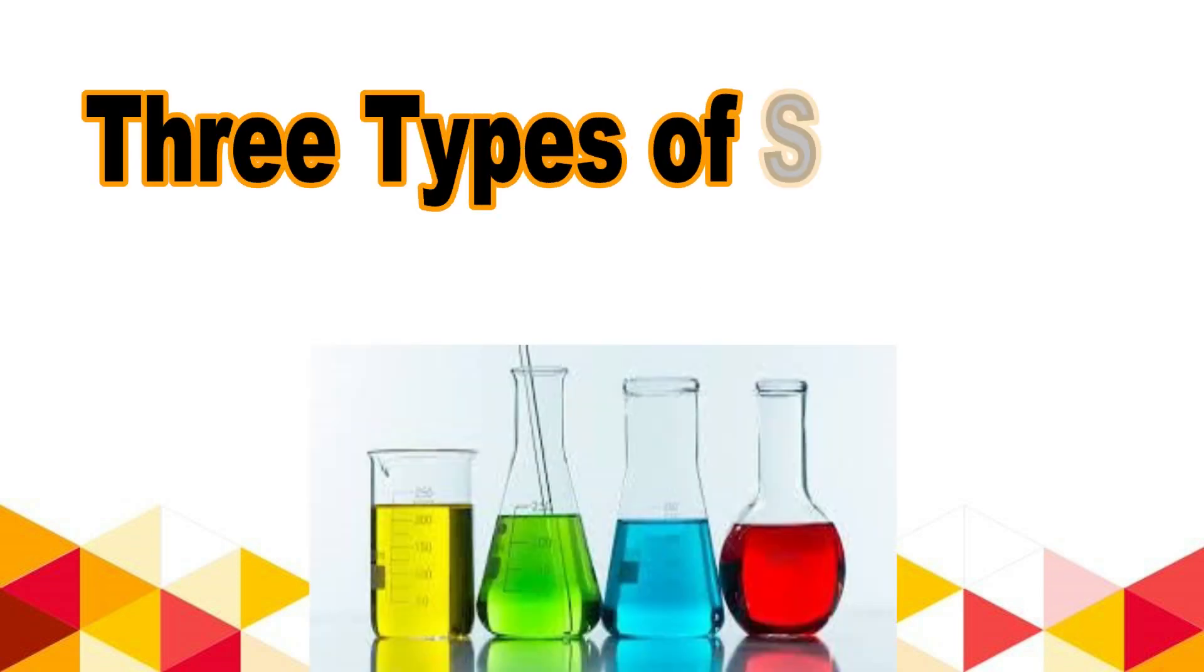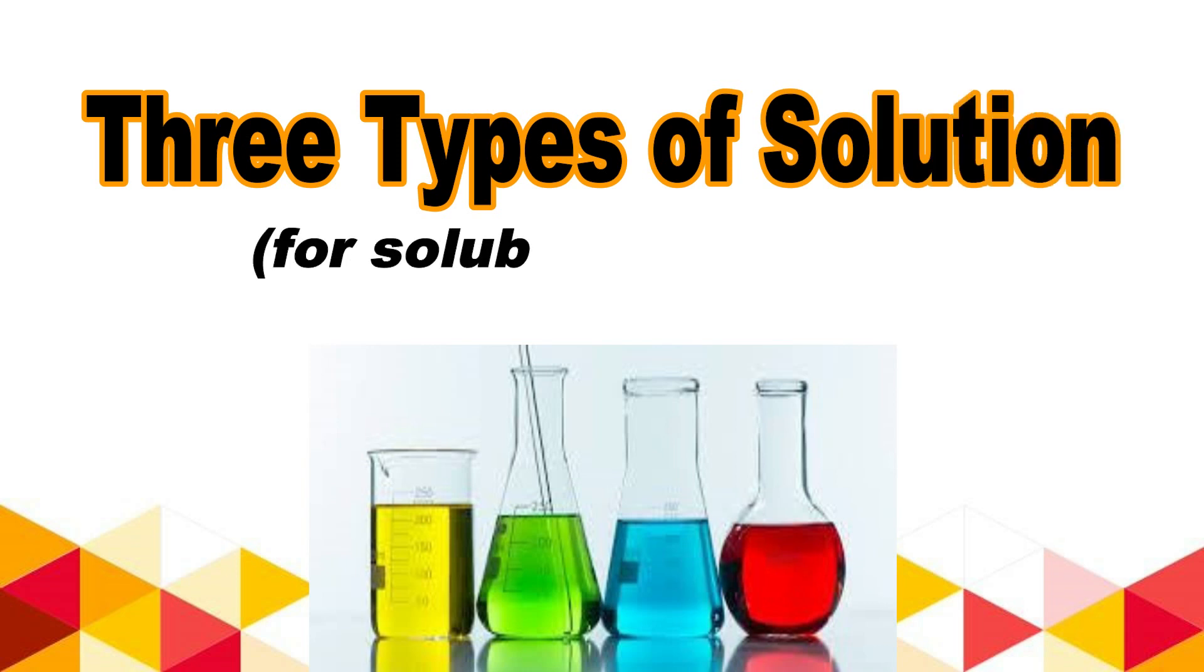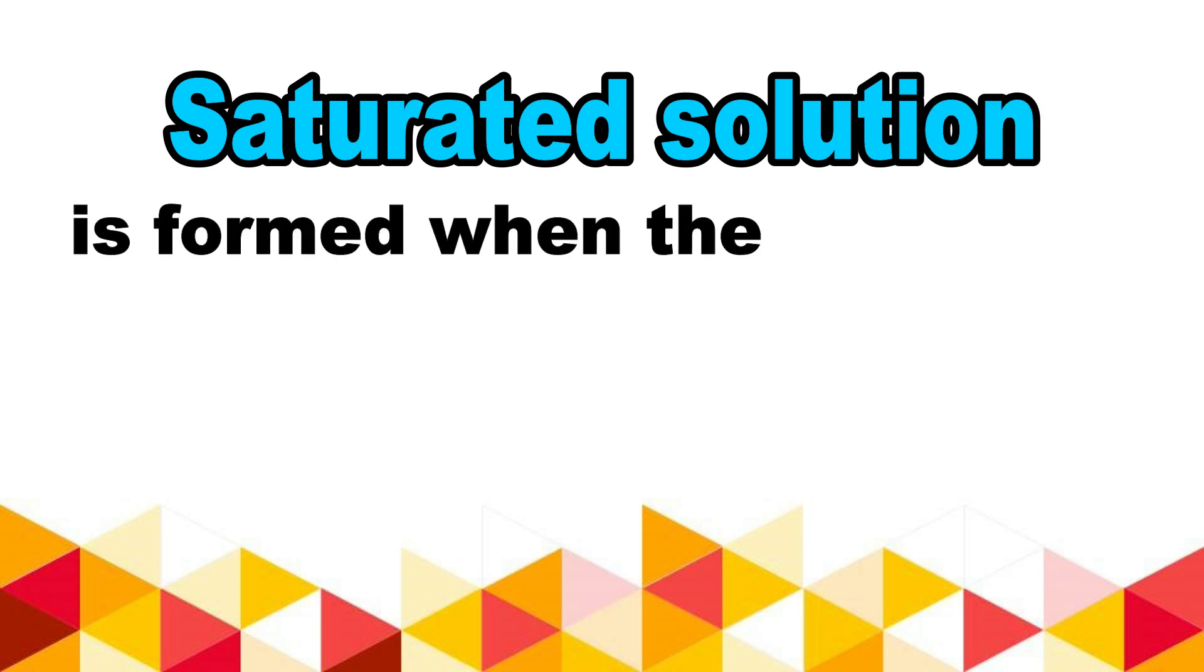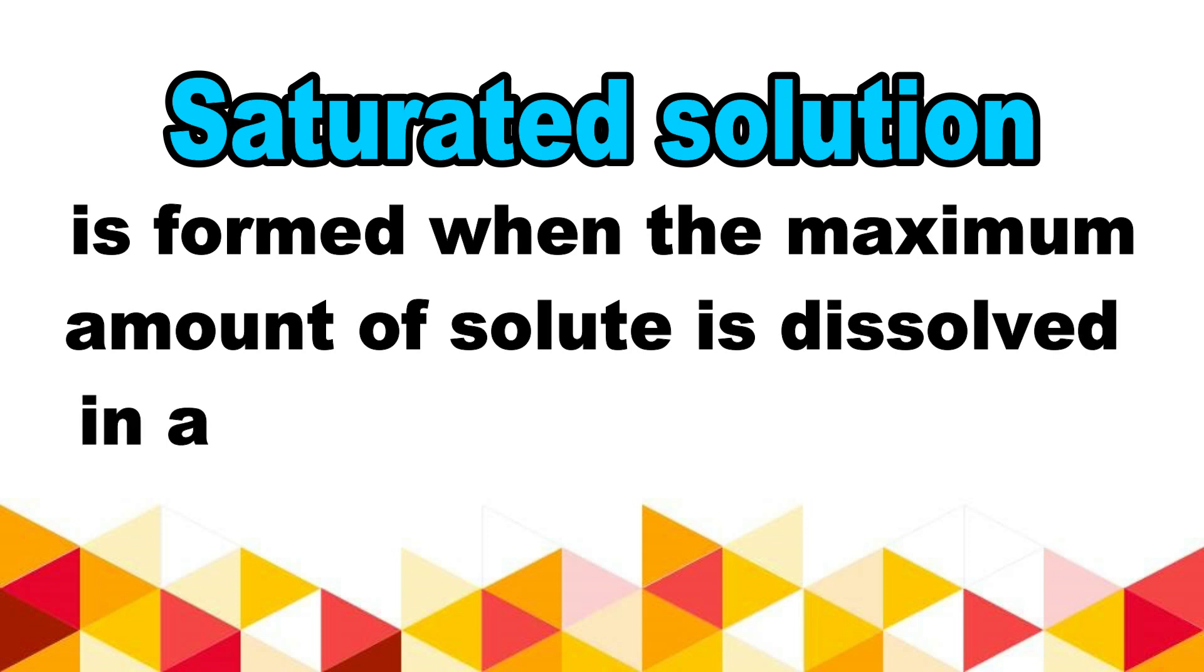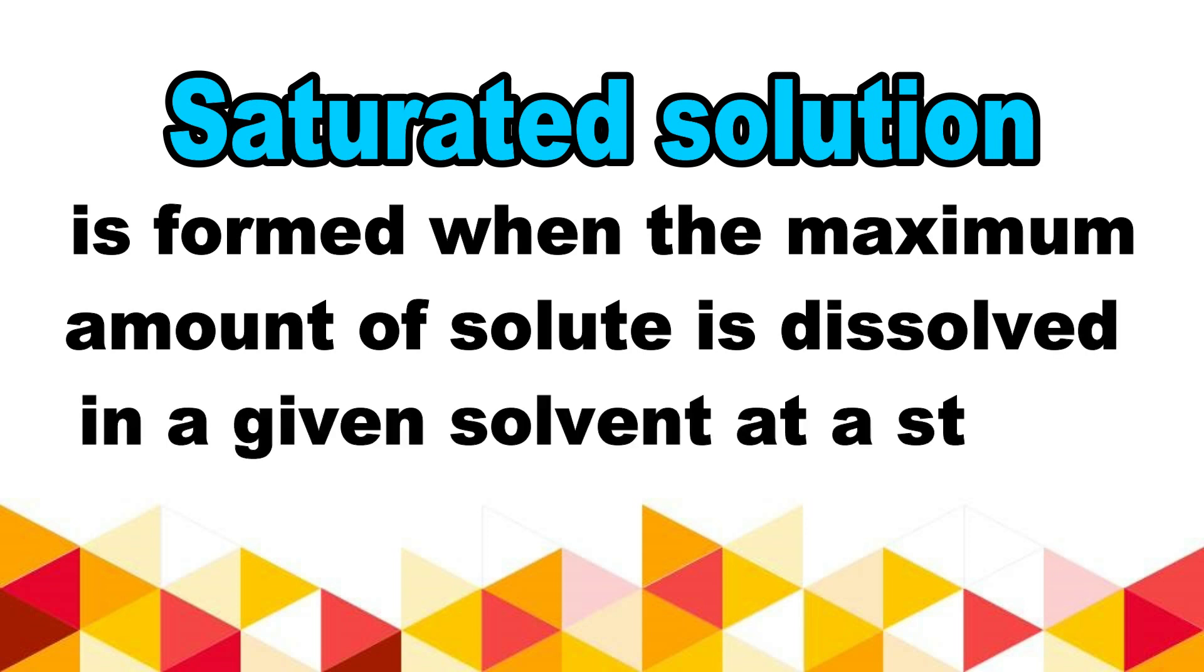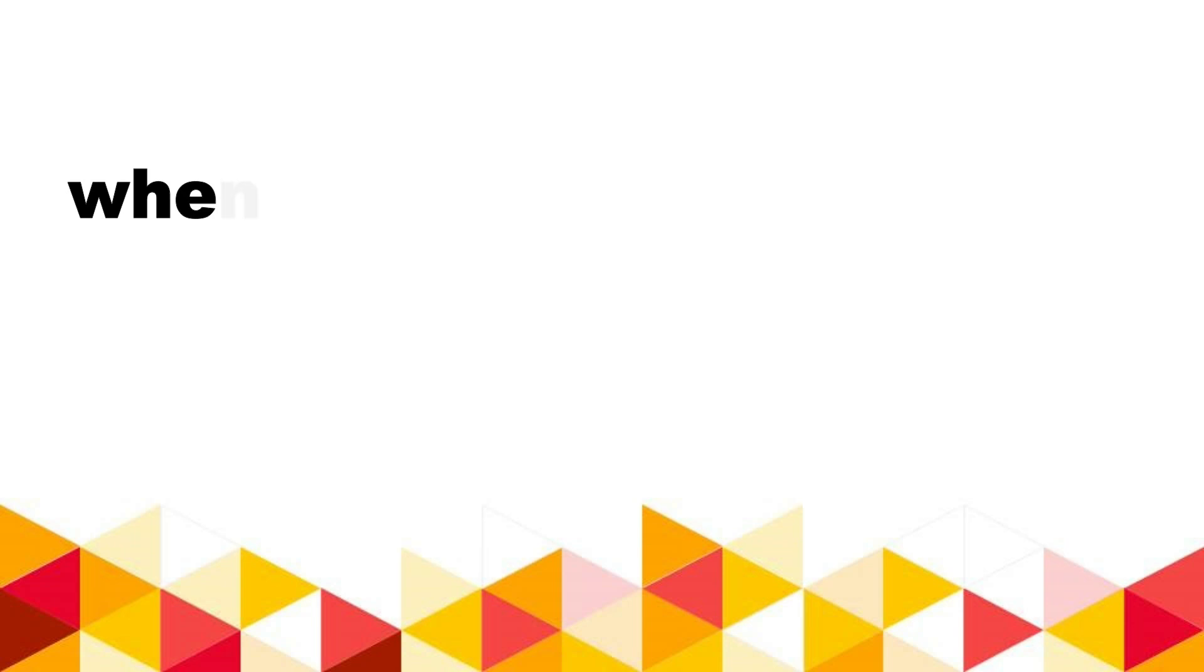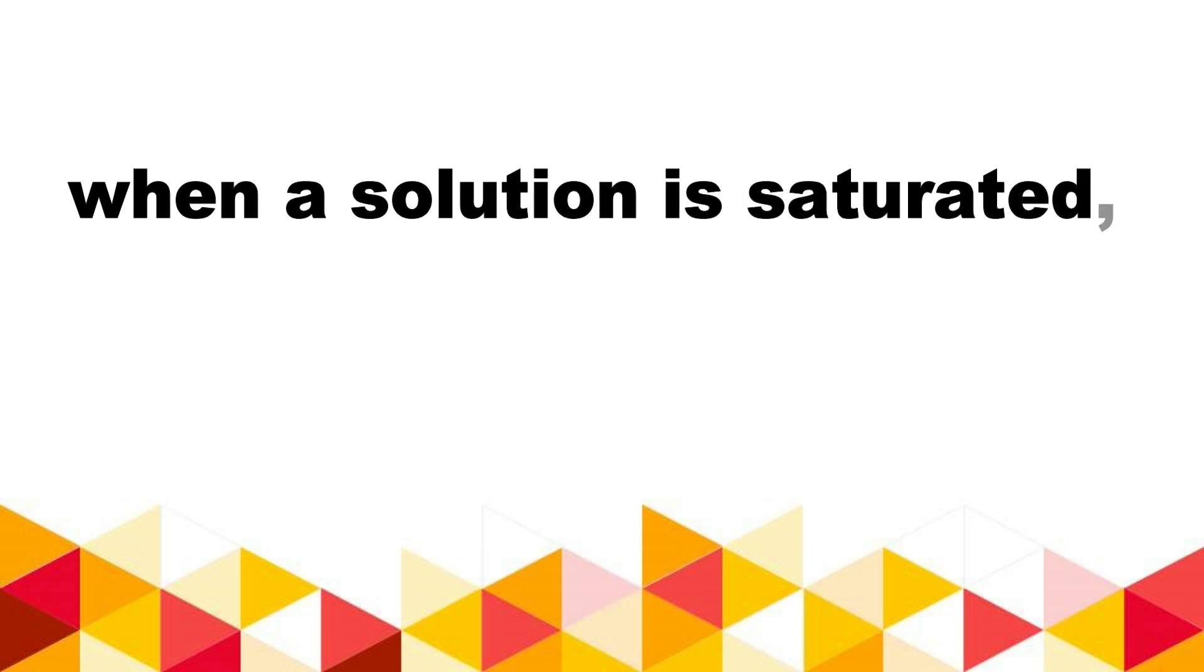Three types of solution for soluble substances. Saturated solution: It is formed when the maximum amount of solute is dissolved in a given solvent at a stated temperature. When a solution is saturated, it can no longer dissolve additional solute.